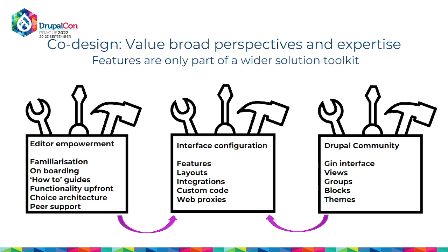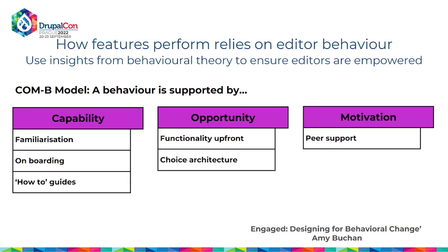The other co-design principle is valuing broad perspectives. Before jumping to features, broaden out and think about what's available in the Drupal community to support how features work, and what editor empowerment mechanisms could control those features. It's not just about putting a feature in an interface — whether it actually does the intended job depends on a lot more. Every behavior is underpinned by capability, opportunity, and motivation: this is the COM-B model from behavioral science.